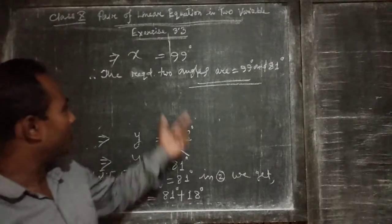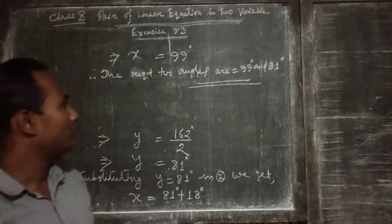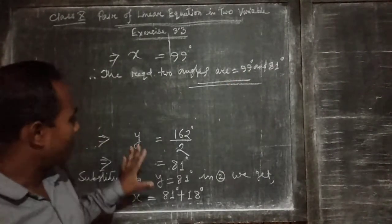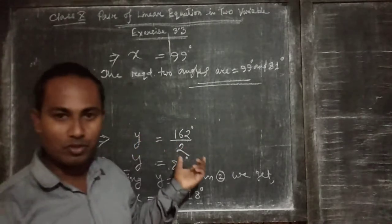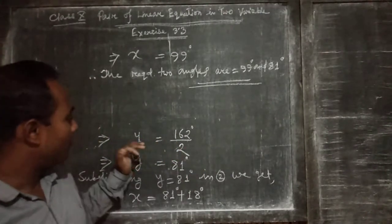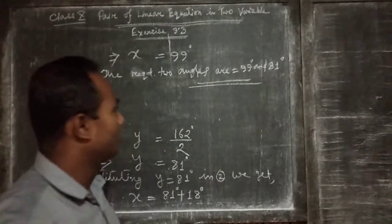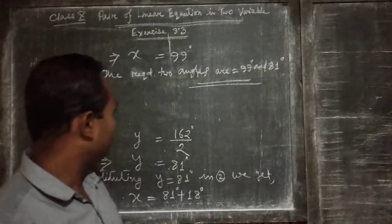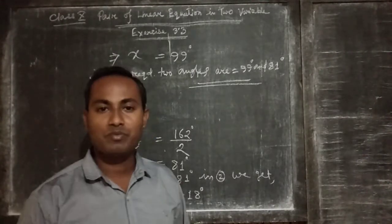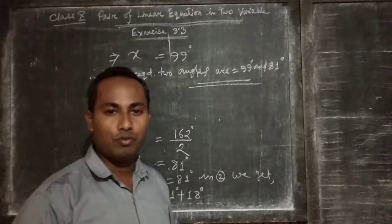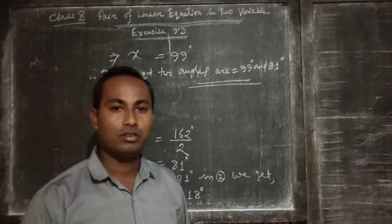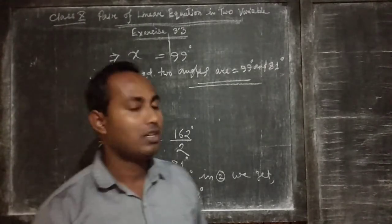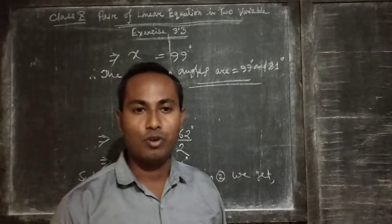We have got the values of x and y, which are the required angles: 99 degrees and 81 degrees. Using the substitution method, we have found out the values of the two angles. I think all of you have understood the solution easily. Please write it down and practice it. Thank you for watching my video.